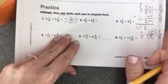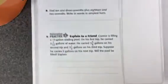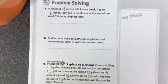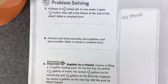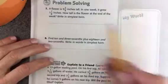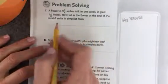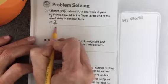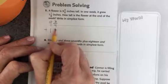All right, that's what you'll continue to do on this page. Let's look at the back page. A flower is 9 and 3 fourths inches tall. In one week, it grew 1 and 1 eighth inches. How tall is the flower at the end of the week? Okay, I can tell that this is adding. I'm going to do 9 and 3 fourths. I'm going to add 1 and 1 eighth.